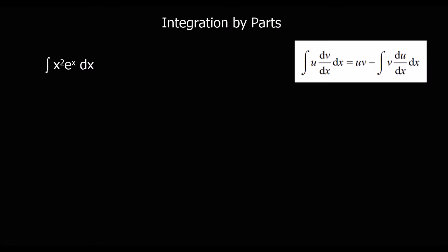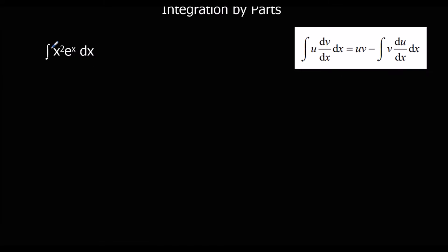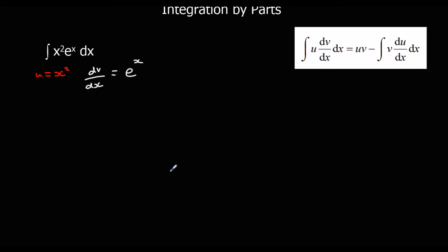In some cases we have to do integration by parts more than once. Here we've got x² times eˣ. I'm going to pick u as x² — the term I want to differentiate — and dv/dx as eˣ — the term I want to integrate. Since differentiating x² gives 2x and then 2, we'll need to differentiate twice to get rid of the x term, so we'll have to do the whole process twice.